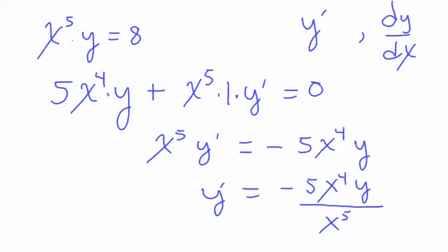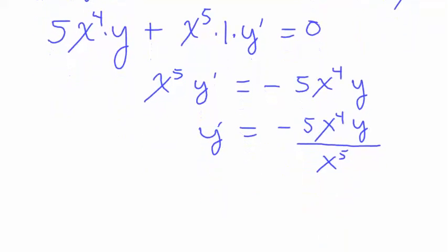Now what we'll want to do is simplify this down. So we have y prime equals - we have 4 x's in the numerator, 5 x's in the denominator. So we can cancel some x's out, and we're only left with one x down here in the denominator.